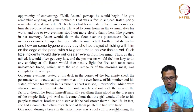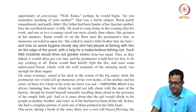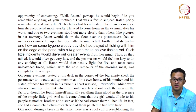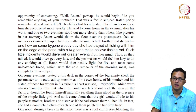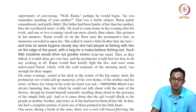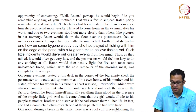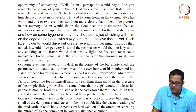On some evenings, seated at his desk in the corner of the big empty shed, the postmaster would call up memories of his own home, of his mother and his sister — those for whom in his exile his heart was sad. Memories always haunting him, but which he could not talk about with the men of the factory, though he found himself naturally recalling them aloud in the presence of this simple little girl. Interestingly, he does not manage to establish this bond with the men in the factory. For some reason he finds himself opening up and establishing dialogue with this little girl Ratan. And so it came about that the girl would allude to his mother, brother, and sister as if she had known them all her life — she had a complete picture of each one of them painted in her little heart.